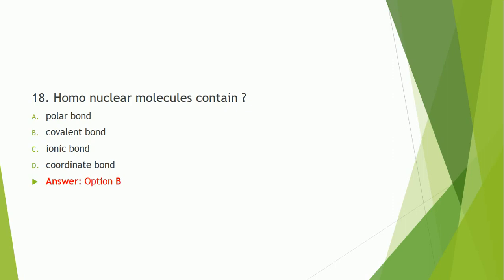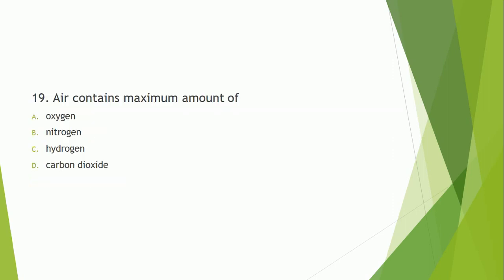Question number 19: Air contains the maximum amount of which element? The answer is option B — nitrogen is present in the maximum amount in air, followed by oxygen.